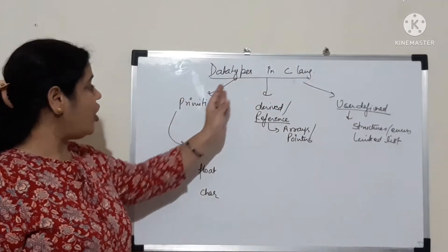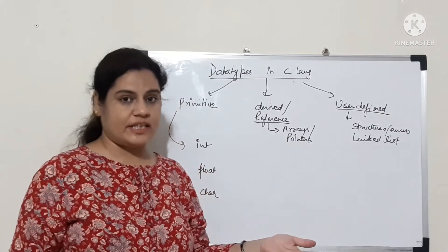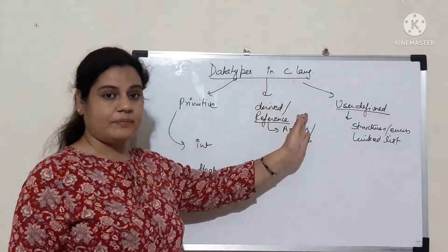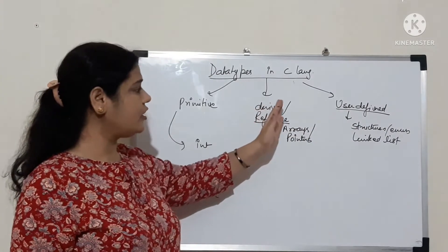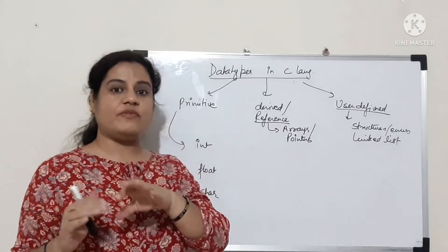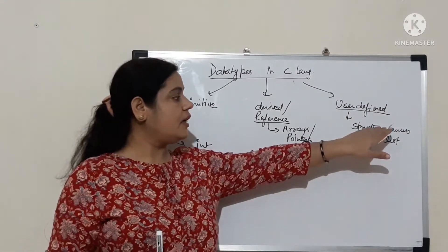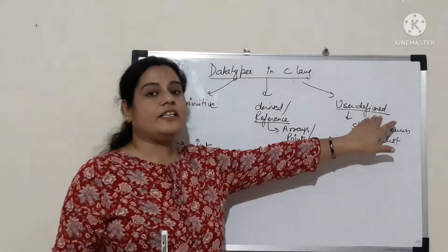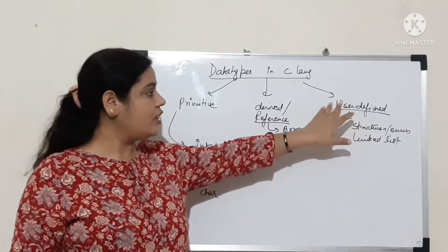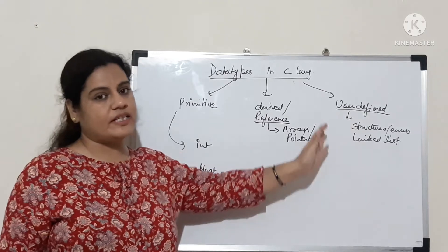Primitive data types are basically the data types which are provided by the language itself. Derived or reference data types are the data types which are derived from the primitive data types — we refer to the value of those data types with the memory location. User-defined data types are defined by the user as per their requirement; structures, enum, and linked list are examples. Derived and user-defined data types will be discussed in further videos.